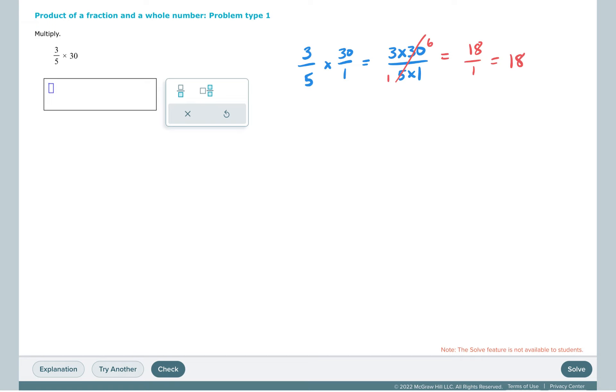We can also think of this as 3 fifths of 30. To do this just in our head, 1 fifth of 30 is 6, so 3 fifths of 30 would be 3 times that. 3 times 6 is 18.